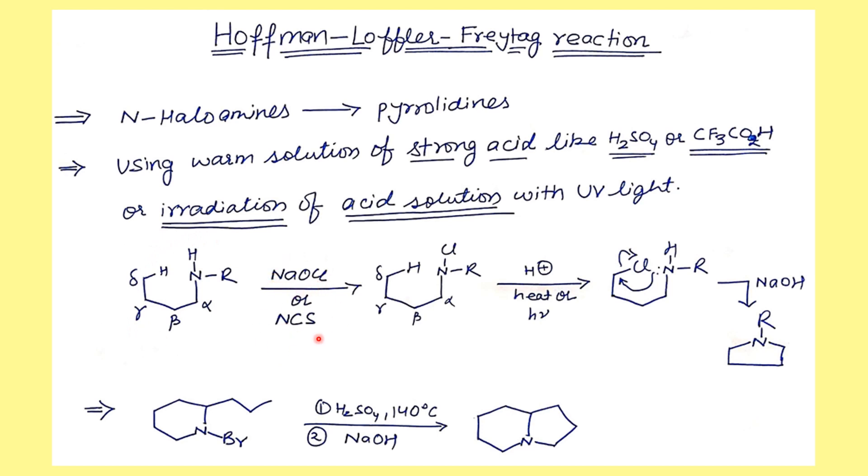Or N-chlorosuccinimide. N-chlorination occurs and then we take the compound in slightly acidic conditions. Because there is a rearrangement that takes place, which we'll discuss in the next slide on the mechanism. Then if you add a base, there's a simple substitution to give you the pyrrolidine.